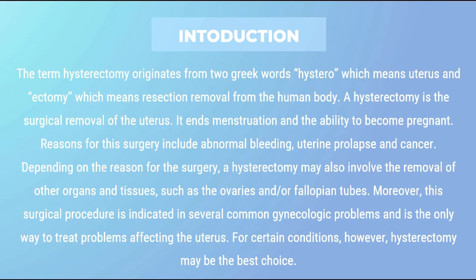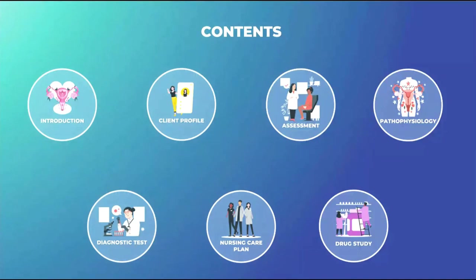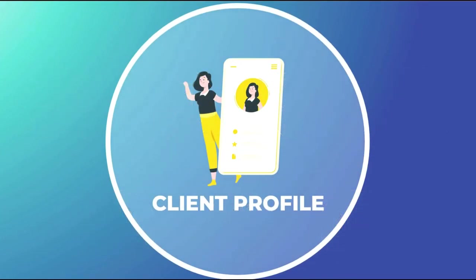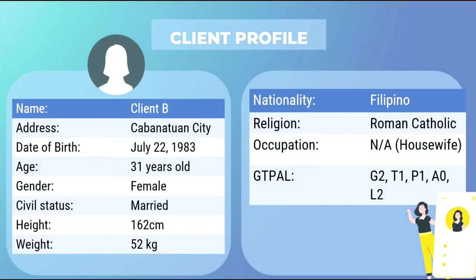For certain conditions, however, hysterectomy may be the best choice. For the client profile: name — Client B; address — Cabanatuan City; date of birth — July 22, 1983; age — 31 years old; gender — female; civil status — married; height — 162 cm; weight — 52 kg; nationality — Filipino; religion — Roman Catholic; occupation — housewife; GTPAL: